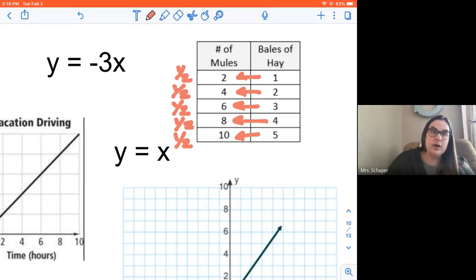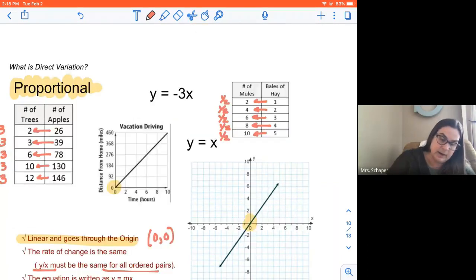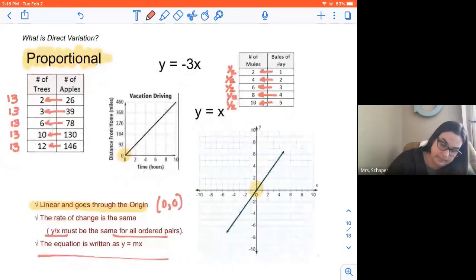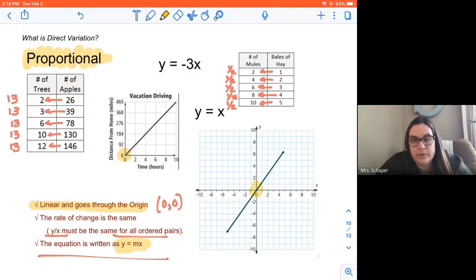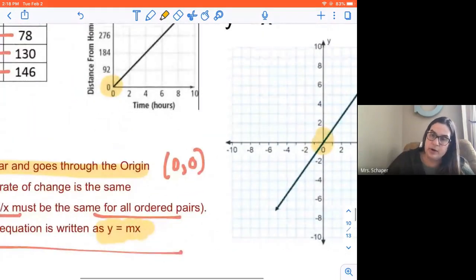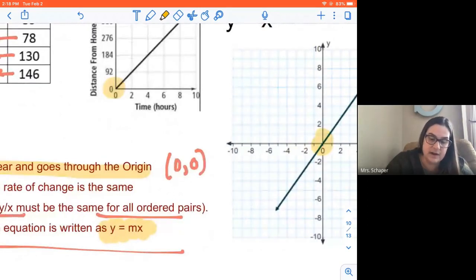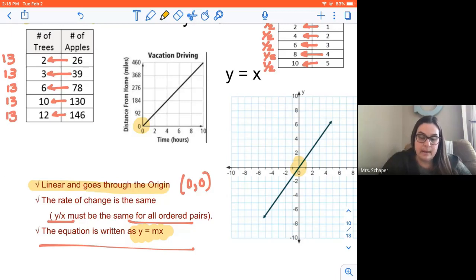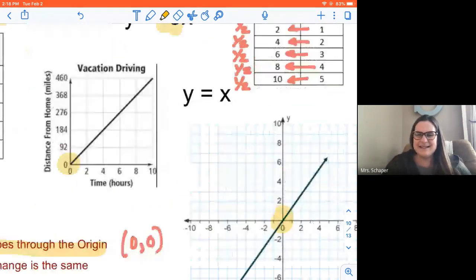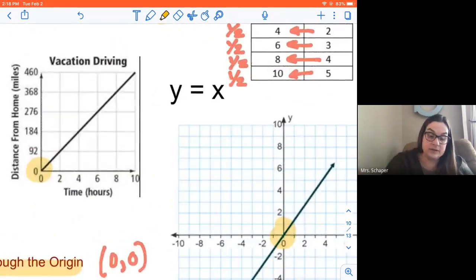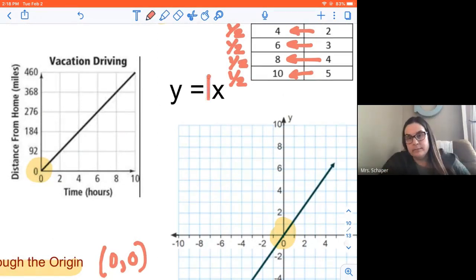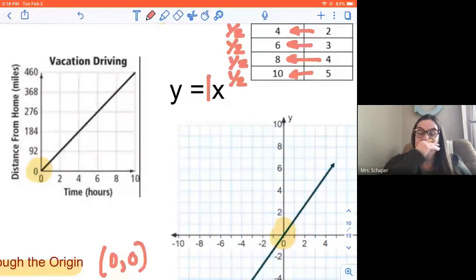And then when you look at an equation, it needs to be written this way. Y equals the slope times x. M represents slope. So it has to be written with y equals a number times x. So when I look at this, I have y equals a number times x. Now you might say, well, y equals x, there's no number there. If there's not a number there, it's a 1. So these are all representations of proportional functions.